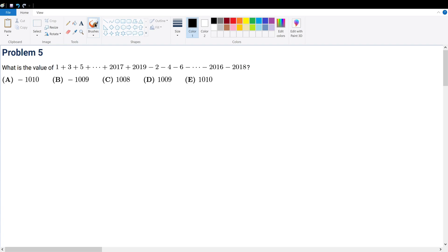Problem 5. What is the value of the following summation? In this case, we have basically the sum of all the odds and then we subtract by all the evens.